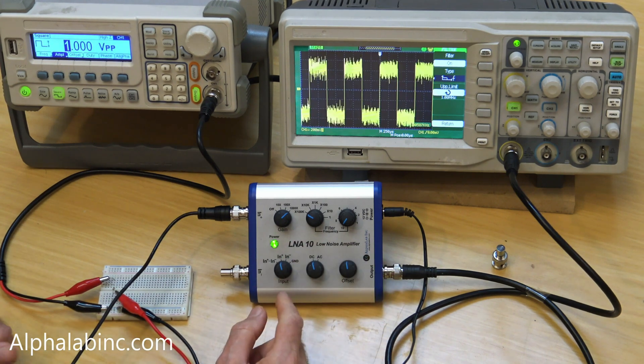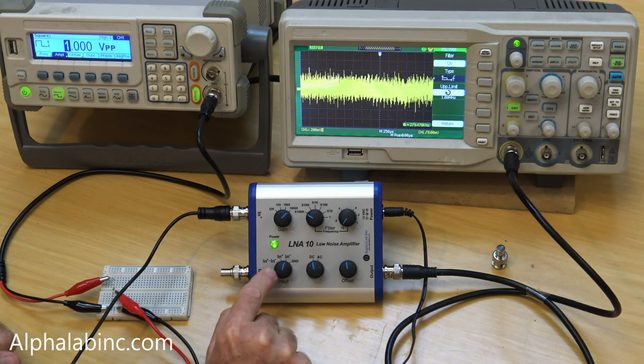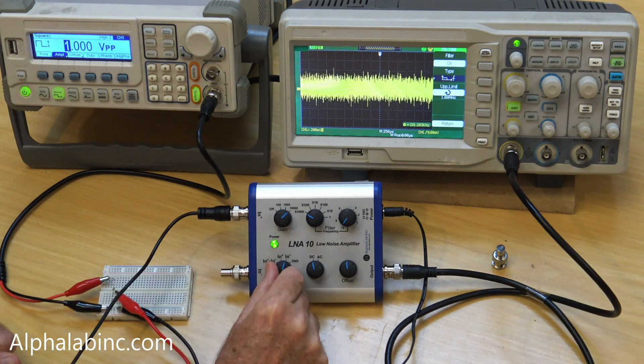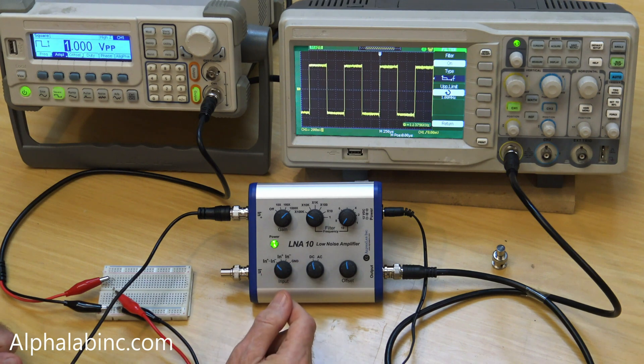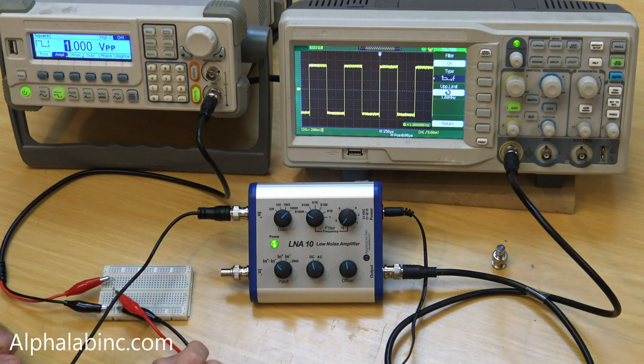The LNA10 can also amplify the ground noise by 1000, shown here. If the ground and hot are precisely subtracted from each other, you get a clean signal. In the LNA10, these two amplifiers are matched to within one one-thousandth of a percent.